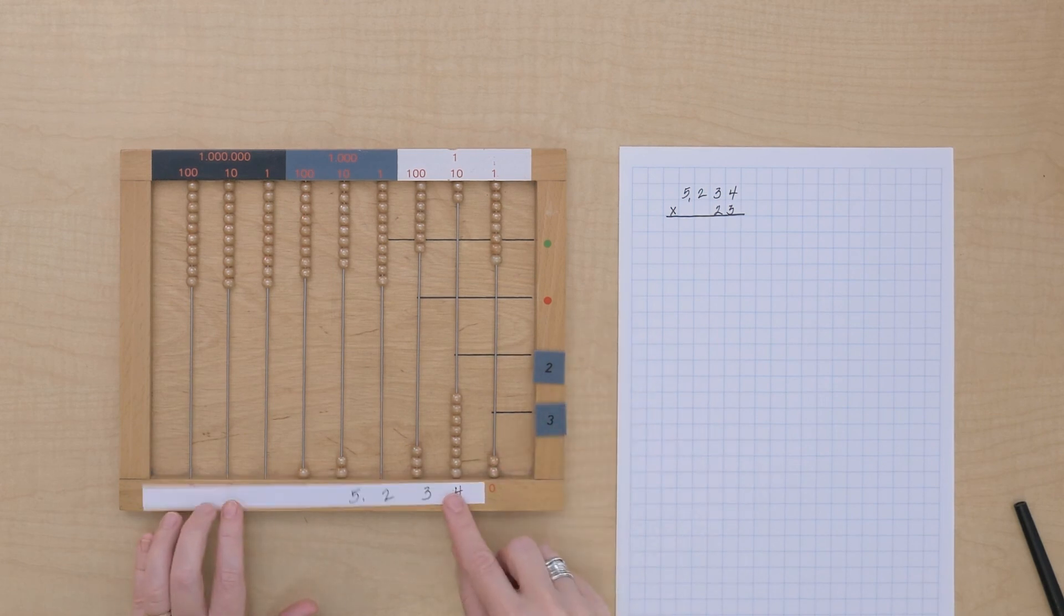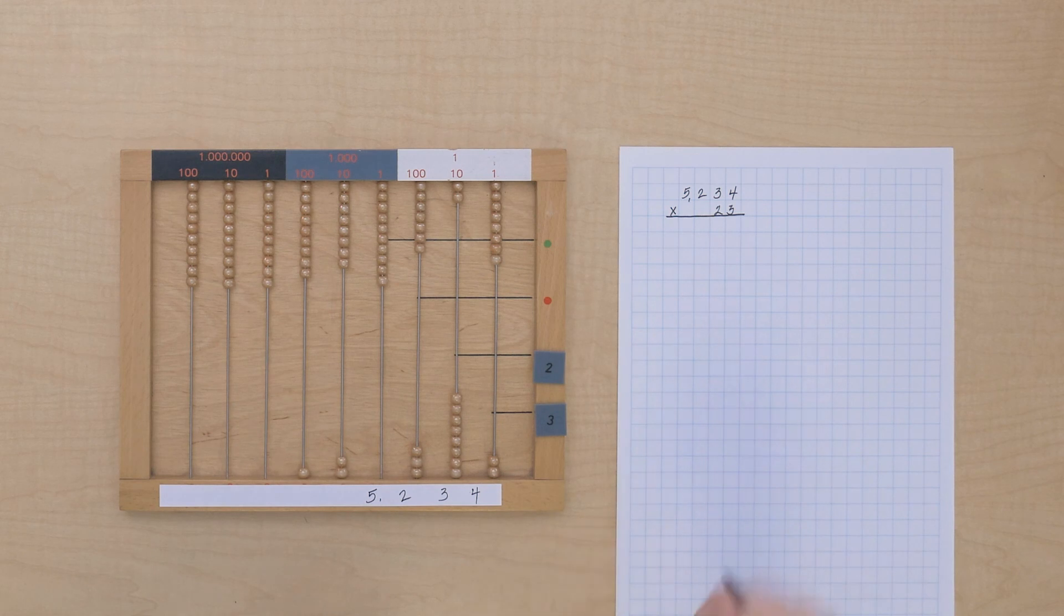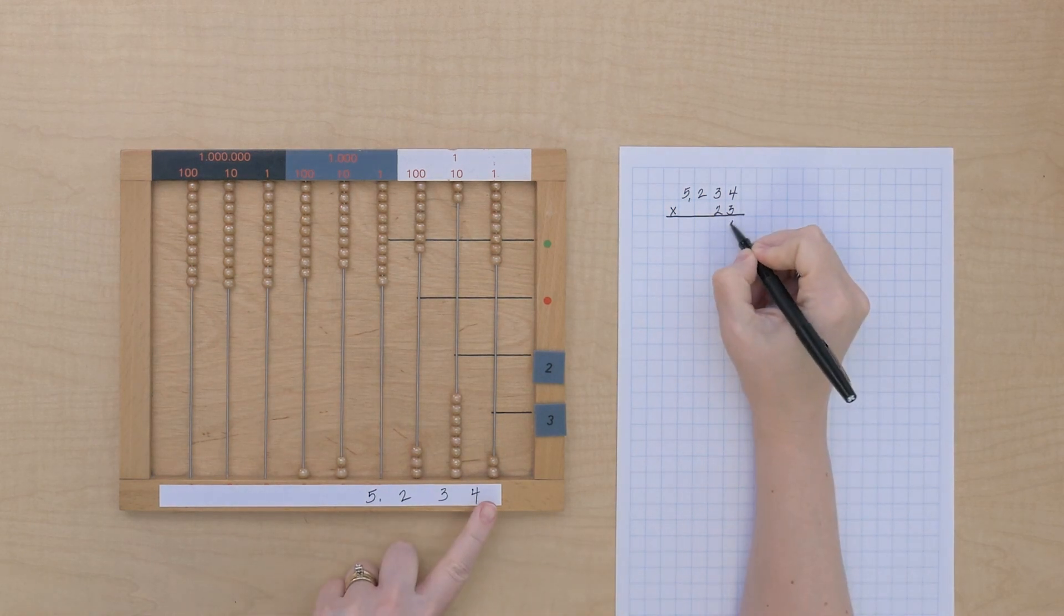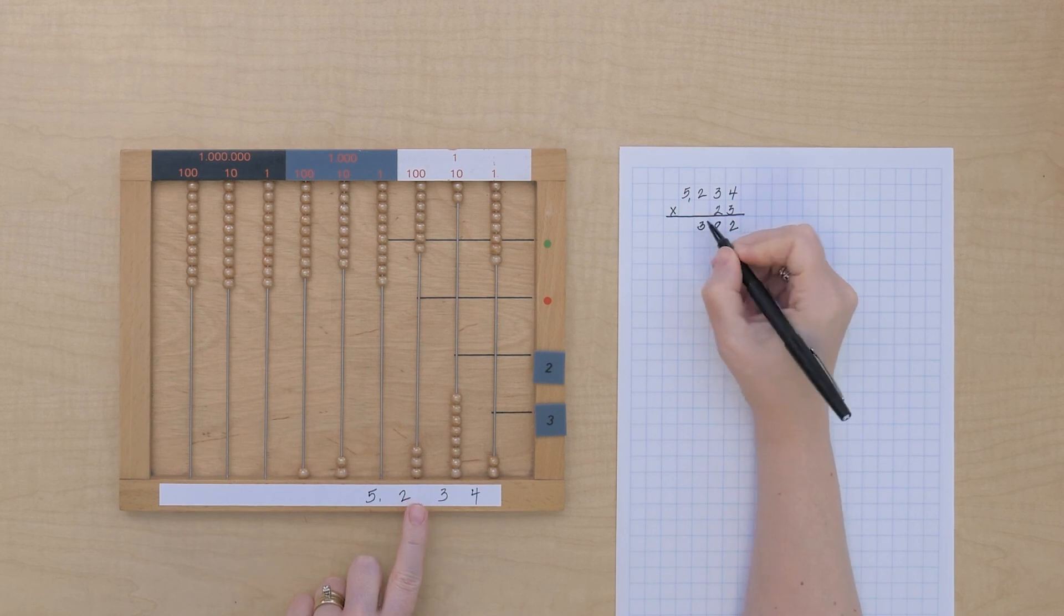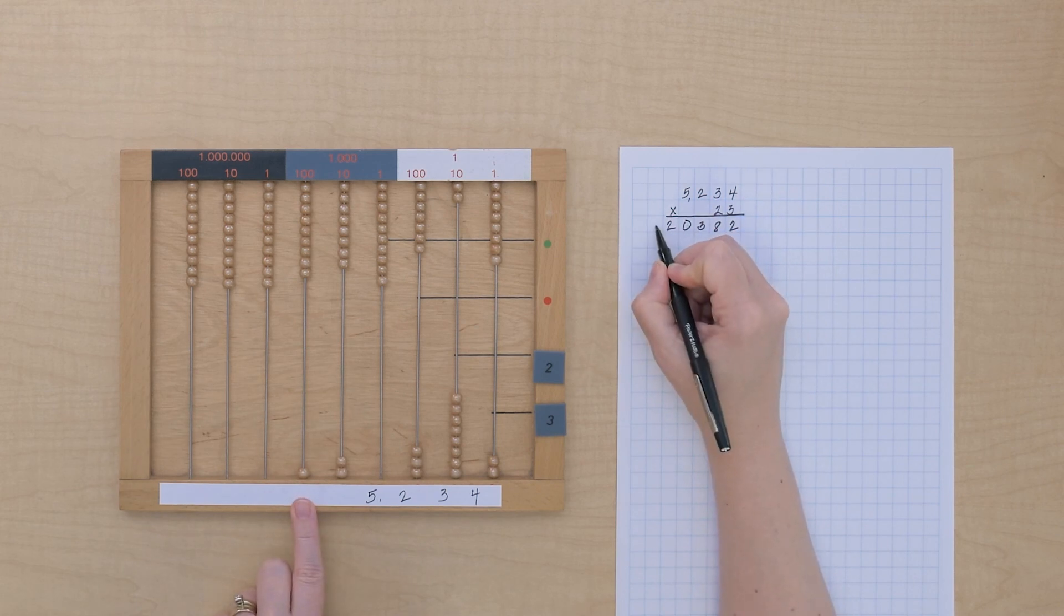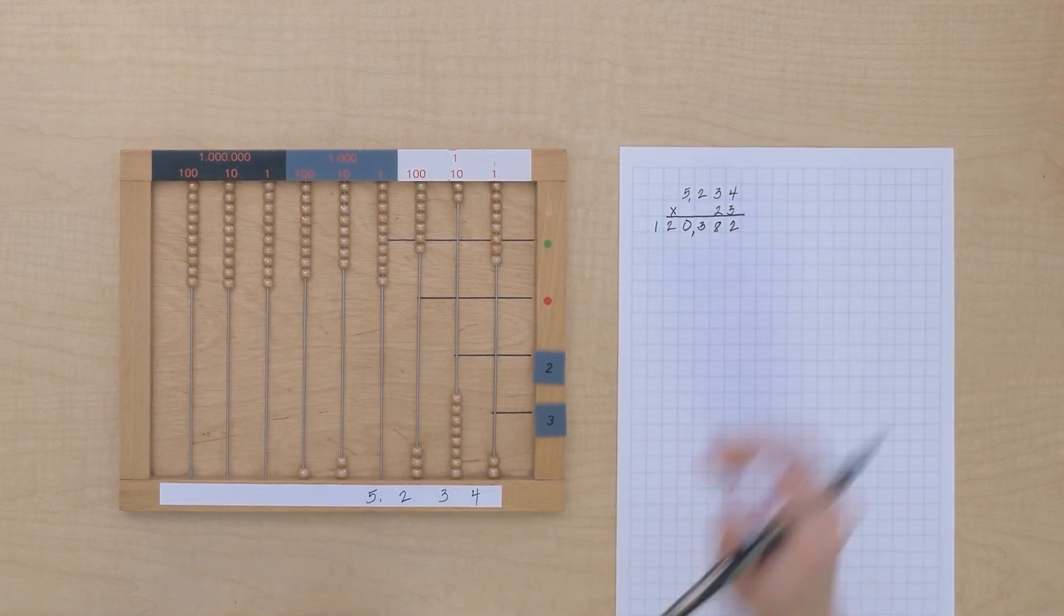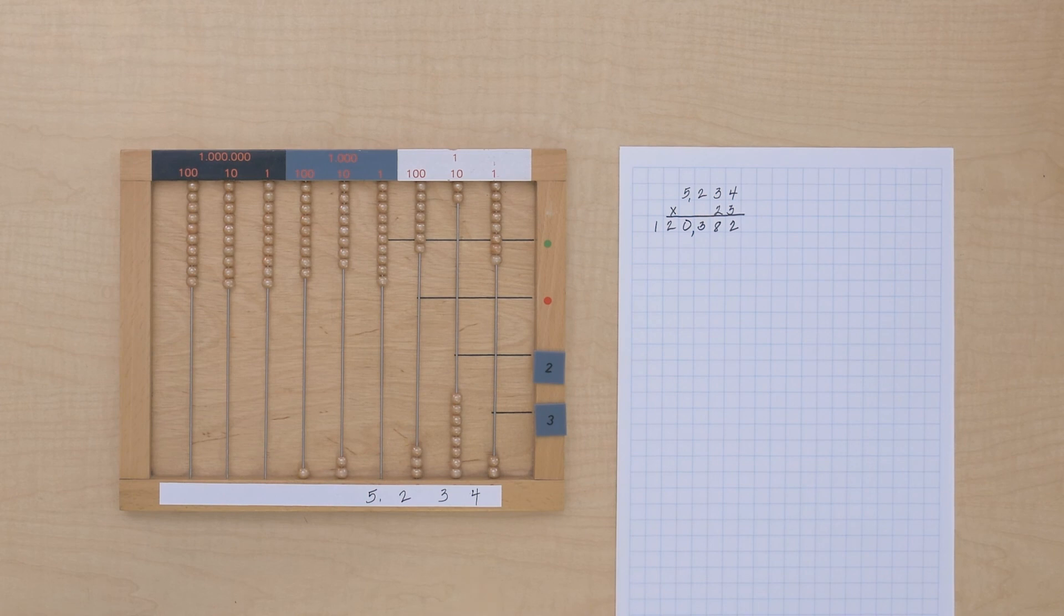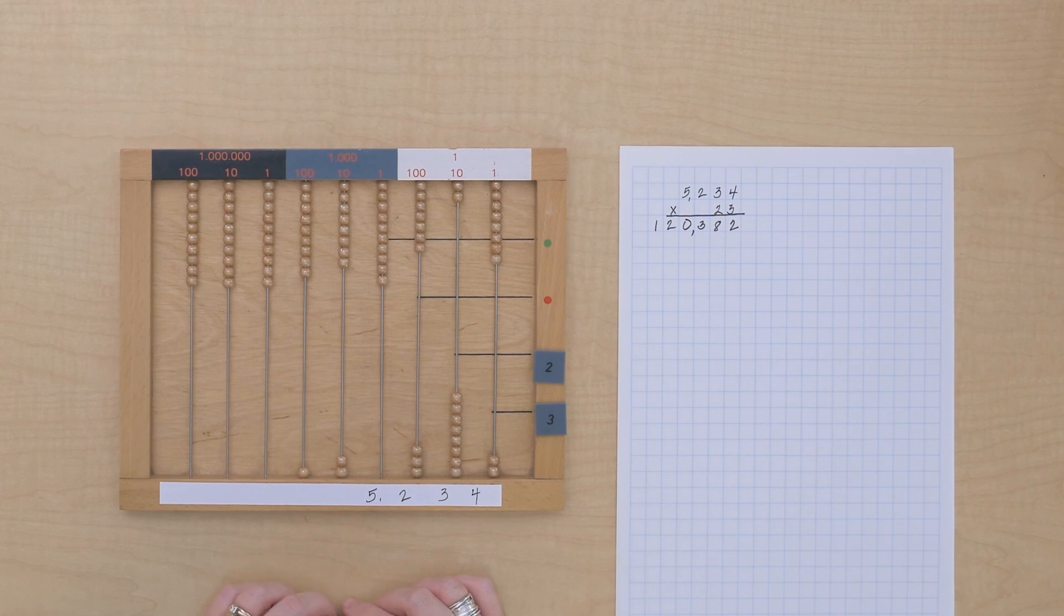So let's take a look. When I multiply 5,234 times 23, I have 2 units, 8 tens, 3 hundreds, 0 thousands, 2... 10 thousands, and 1 hundred thousand. So 5,234 times 23 equals 120,382. Let's try another one like this.